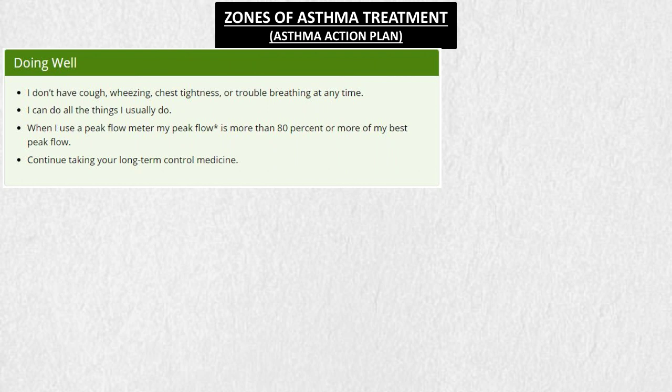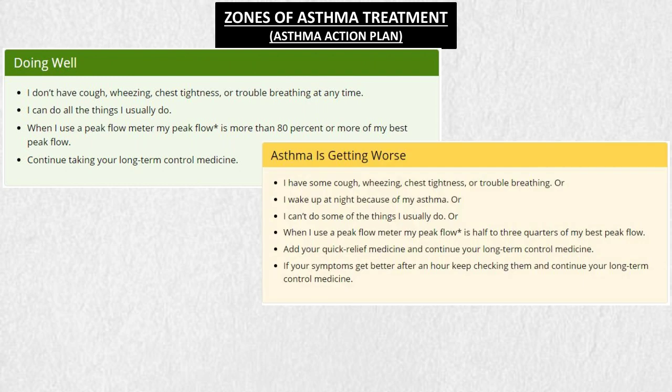The asthma action plan has three zones: green, yellow, and red. In the green zone, the patient is not experiencing any signs and symptoms, has well-controlled asthma, and is able to do most activities without getting tired. In this zone, the patient is advised to take the long-term medications already prescribed.